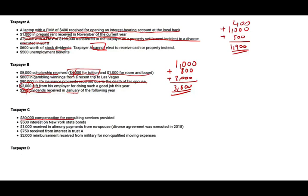Taxpayer C: $30,000 compensation for consulting services — taxable. $500 interest on a New York state bond — be careful, when you see a city or state name, that signals a municipal bond, so it's not included. $1,000 alimony payment from an ex-spouse under a divorce agreement executed in 2018 — alimony executed in 2018 and forward is included. $750 interest received from a trust — included. $2,000 reimbursement from the military for non-qualifying moving expenses — included as well. Total gross income for Taxpayer C: $33,750.